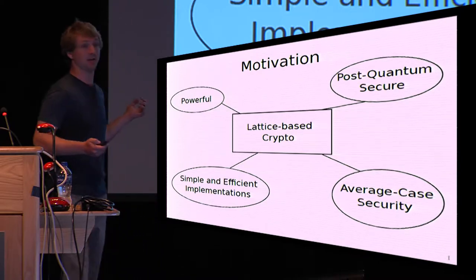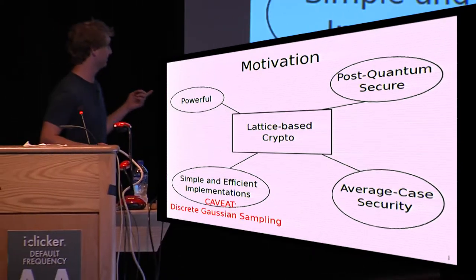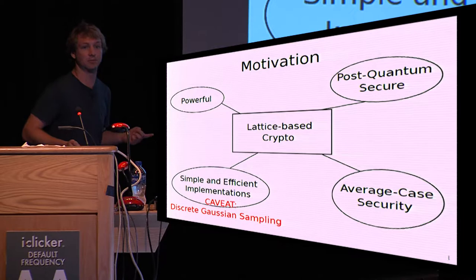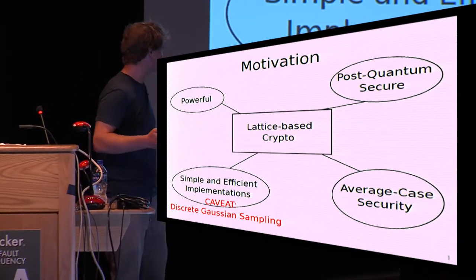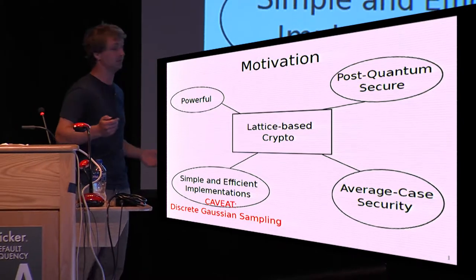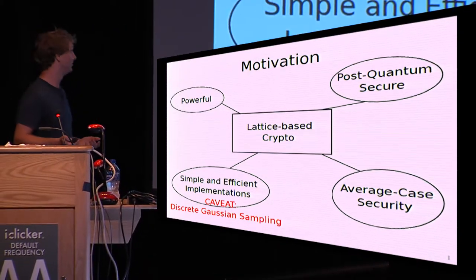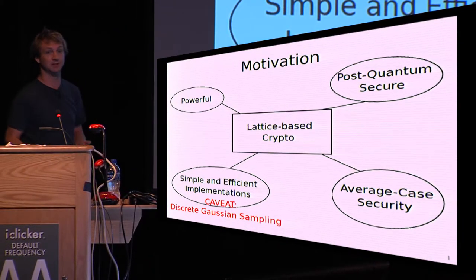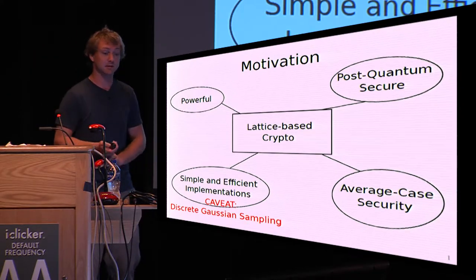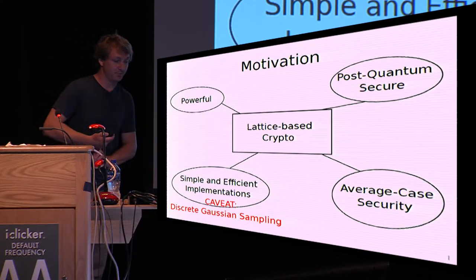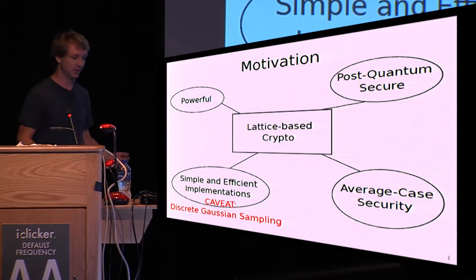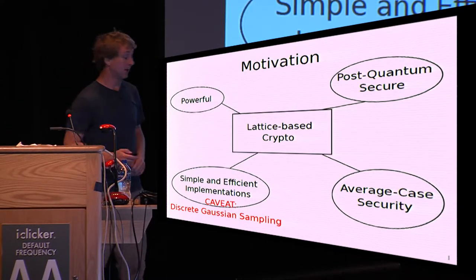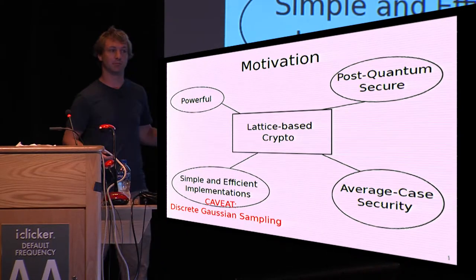Well, there's a caveat here. And this caveat is discrete Gaussian sampling, which is an operation that is part of many lattice-based crypto schemes. When it comes to discrete Gaussian sampling, I would say you can have either simple or efficient, but not really both. And this is what our work addresses.